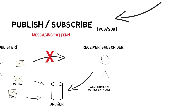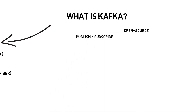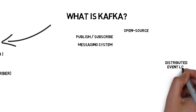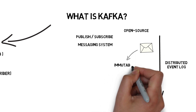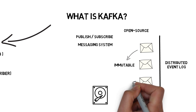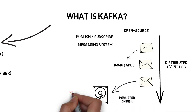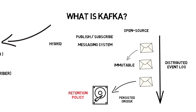So what is Kafka then? Apache Kafka is an open-source publish-subscribe messaging system, also very often described as a distributed event log where all new records are immutable and appended to the end of the log. In Kafka, messages are persisted on disk for a certain period of time known as the retention policy. This is usually the main difference between Kafka and other messaging systems, and makes Kafka in some way a hybrid between a messaging system and a database.